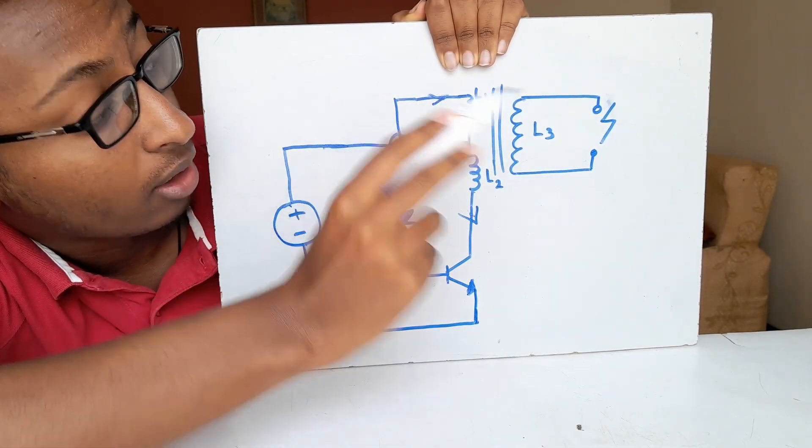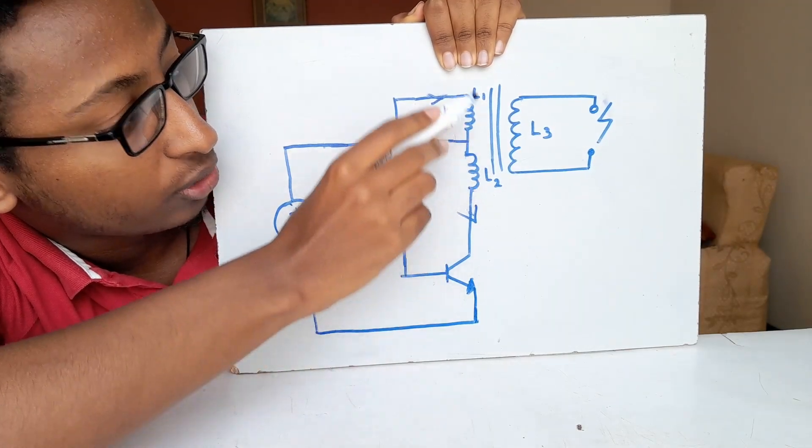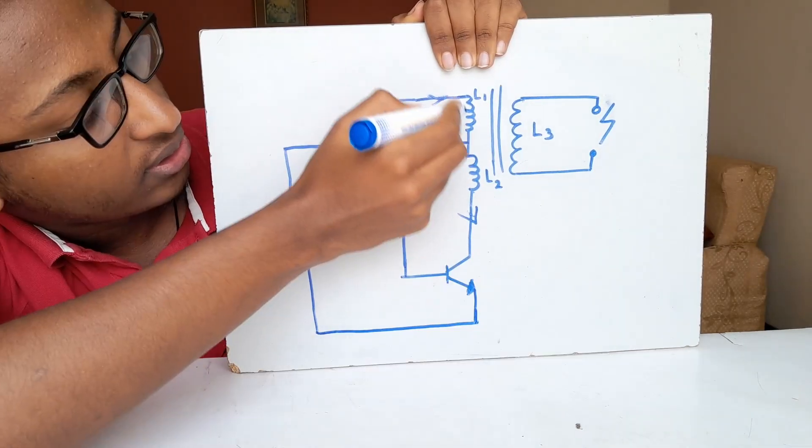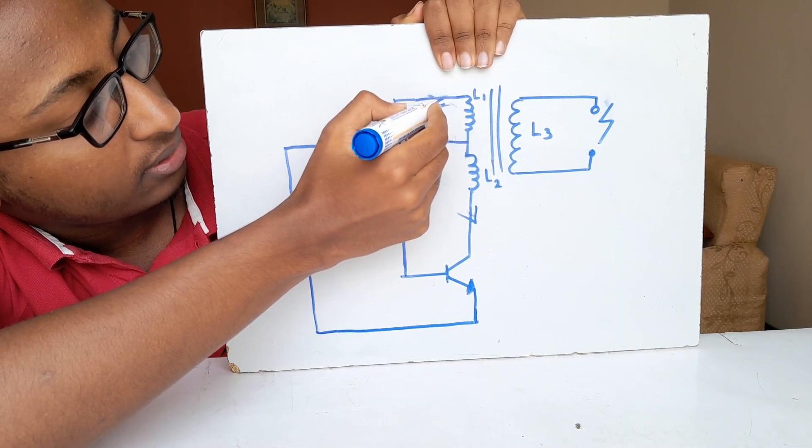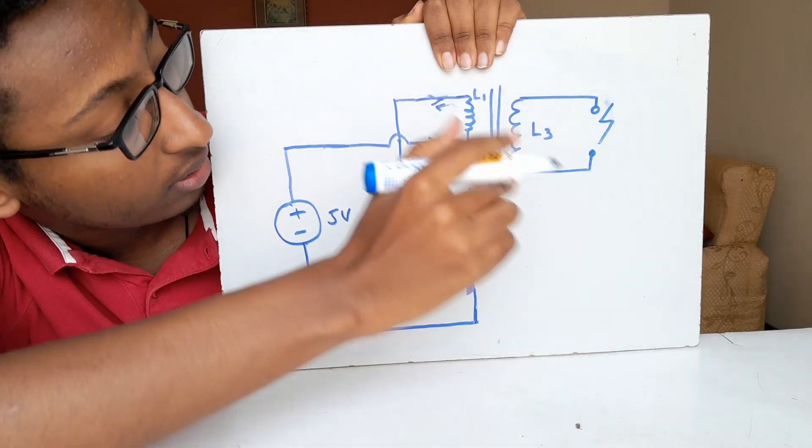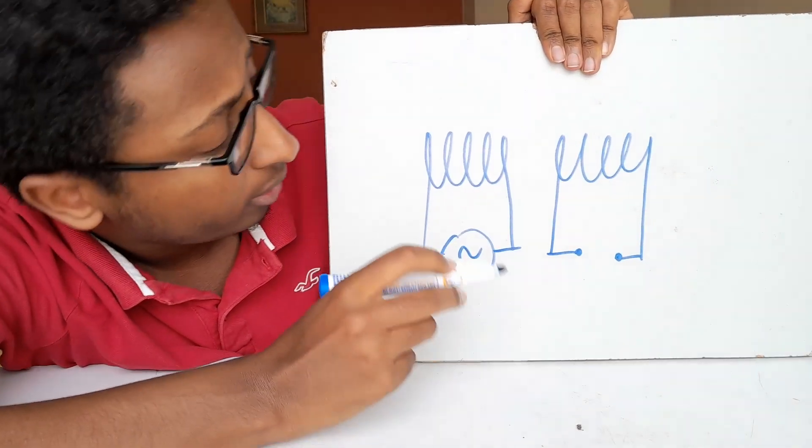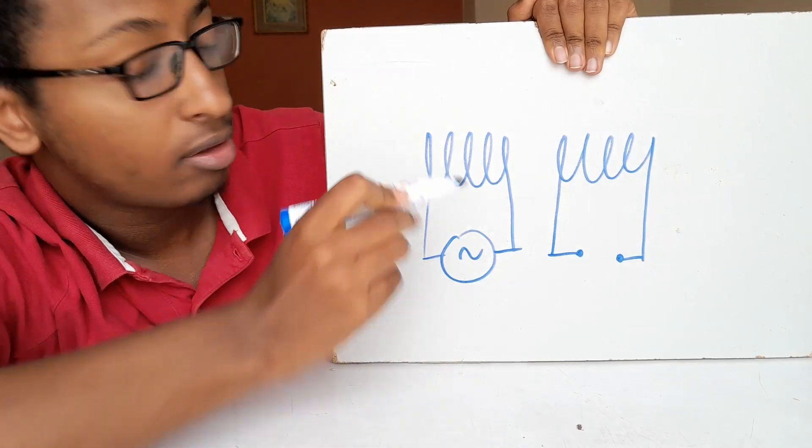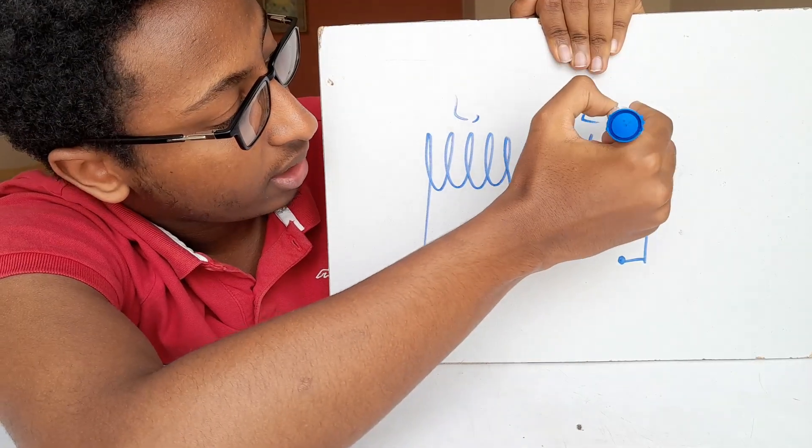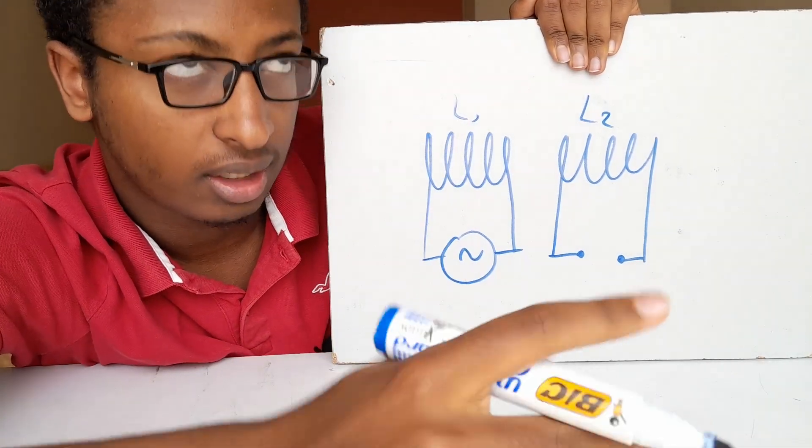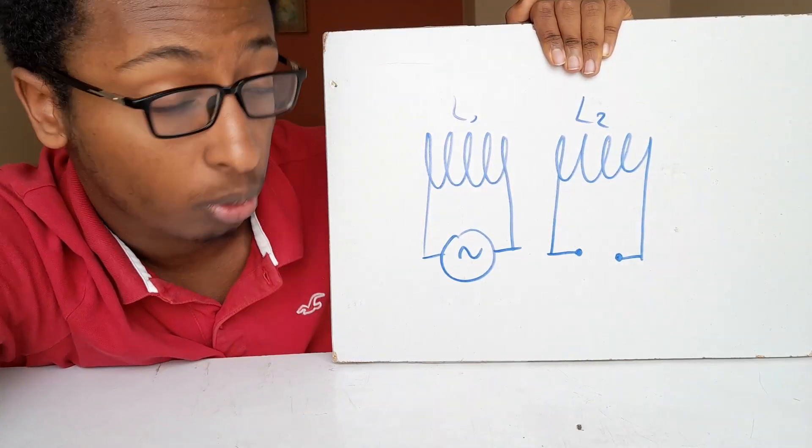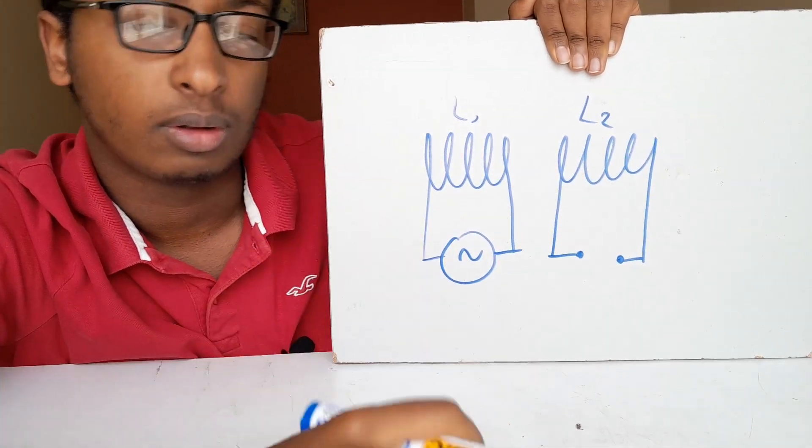L2 causes L1 to produce an induction current, and that induced current acts in an opposing way, which results in opposing current produced right here. That induced current will oppose the original current flow. When two coils are placed like this and we alternate the current through L1, there will be voltage induced on L2. That's because of the change of magnetic field. You may know it as Faraday's law or Lenz's law.